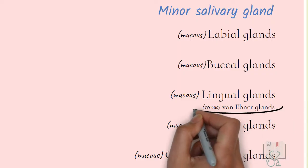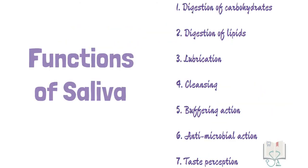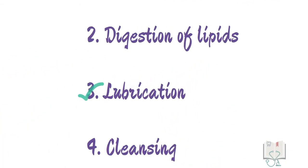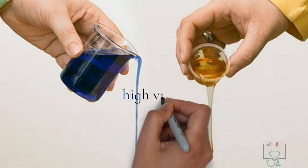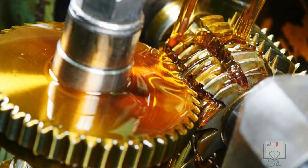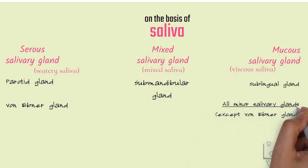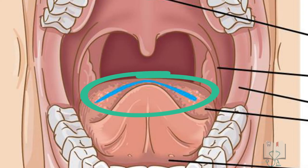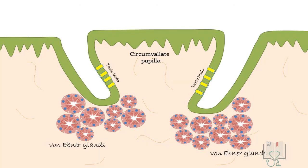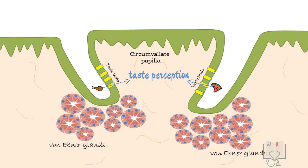Von Ebner glands are the only minor salivary glands which are fully serous. One primary function of saliva is lubrication of the oral cavity. For this, saliva needs to form a thin film on the oral mucosa, requiring thick consistency or higher viscosity — like a lubricant in a machine. For this reason, the majority of minor salivary glands are mucous. Von Ebner glands, located adjacent the circumvallate papillae, have a different function: the circumvallate papillae have taste buds on their lateral borders, so food particles must enter the trough for taste perception to occur.